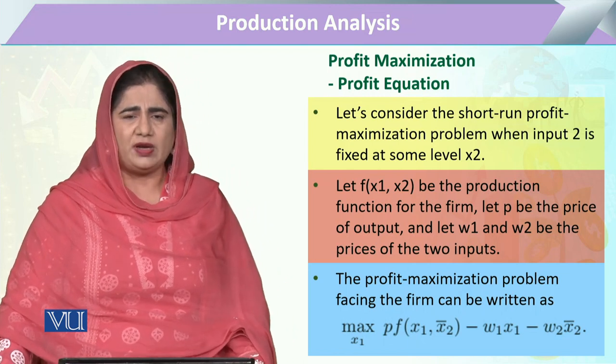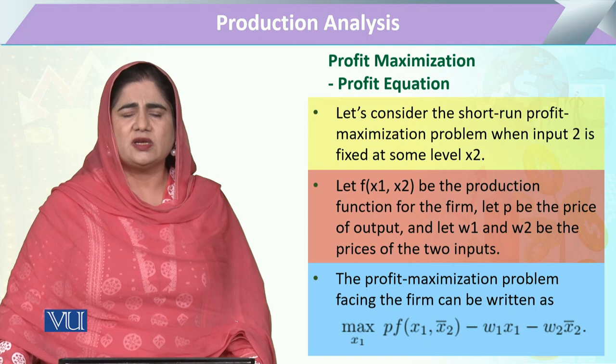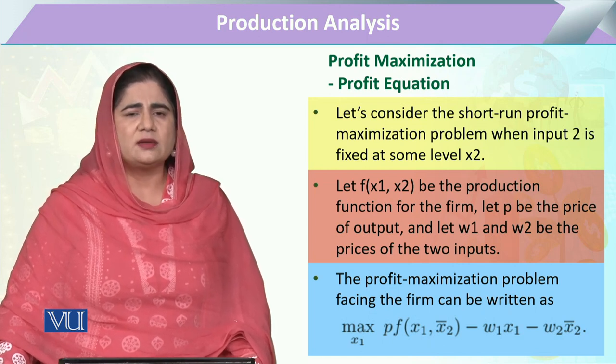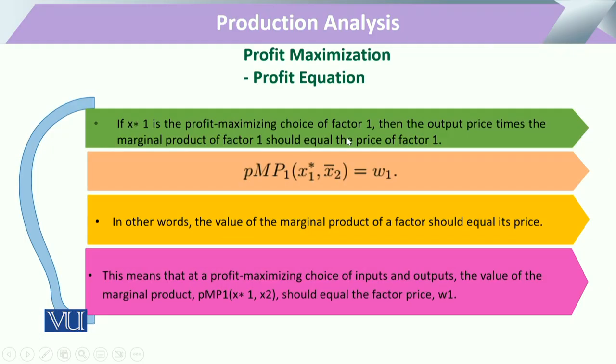That maximization of profit has to be done with respect to the objective of the cost level. In the equation, if we see that it depends upon one input or another — or three or four — all the inputs will be multiplied by their respective input prices and summed up to give the total cost. Maximization of profit will require that this be done with reference to the input prices.